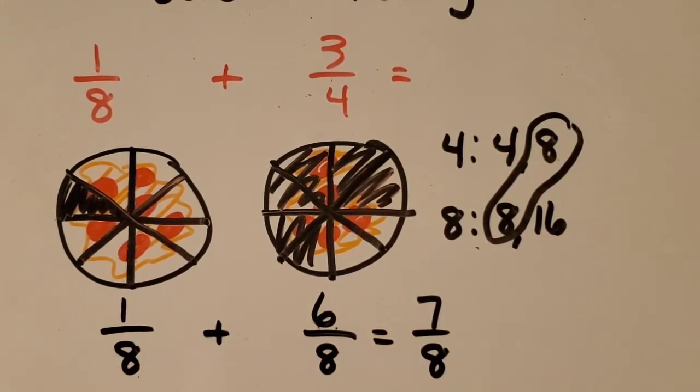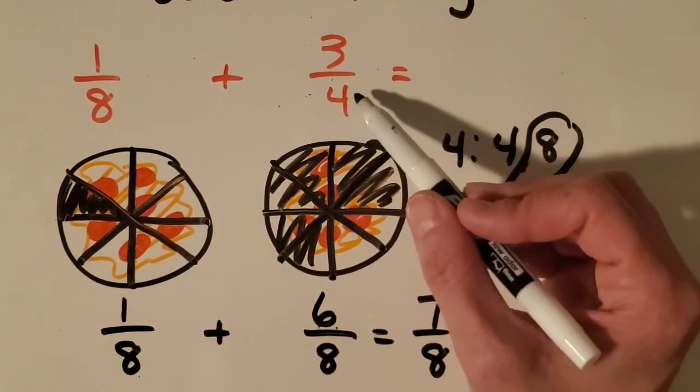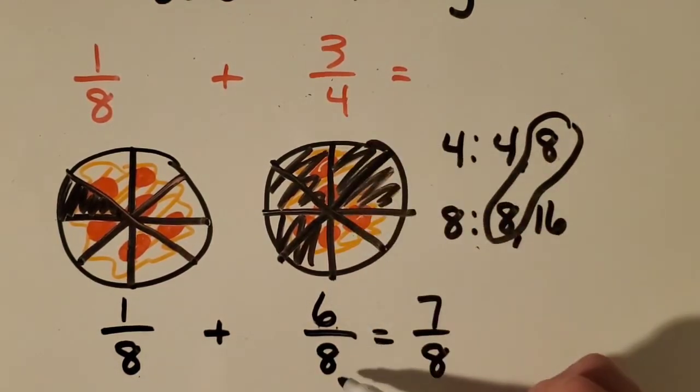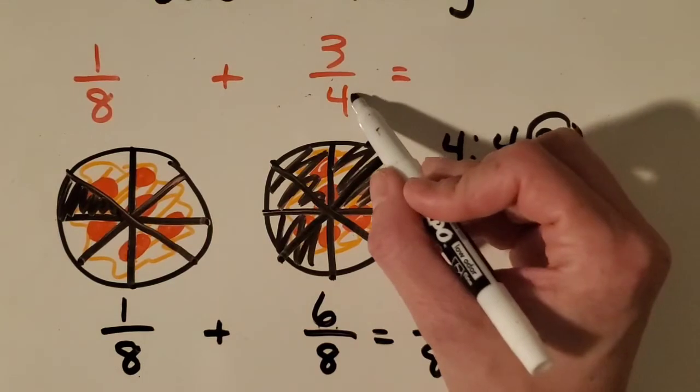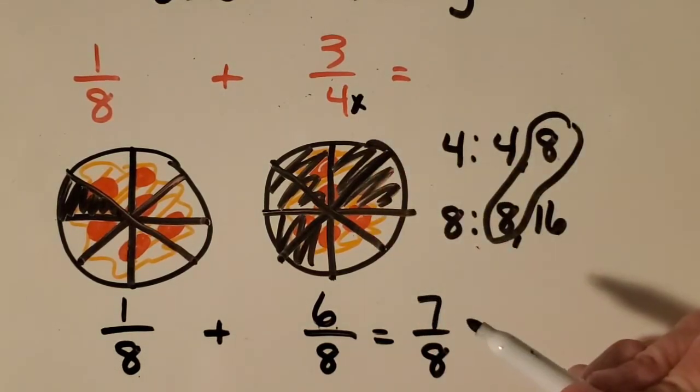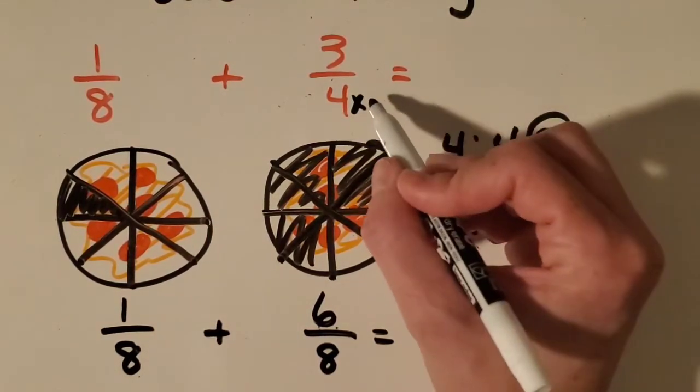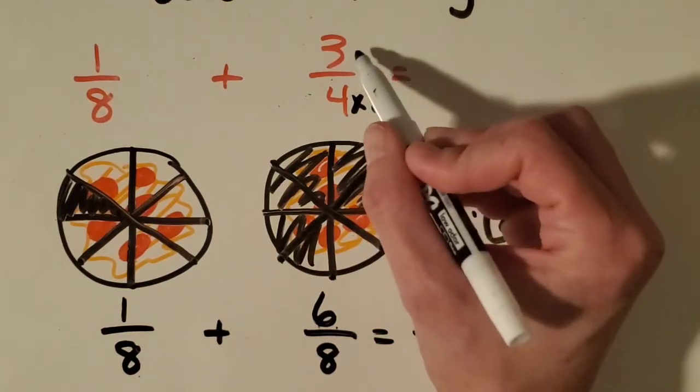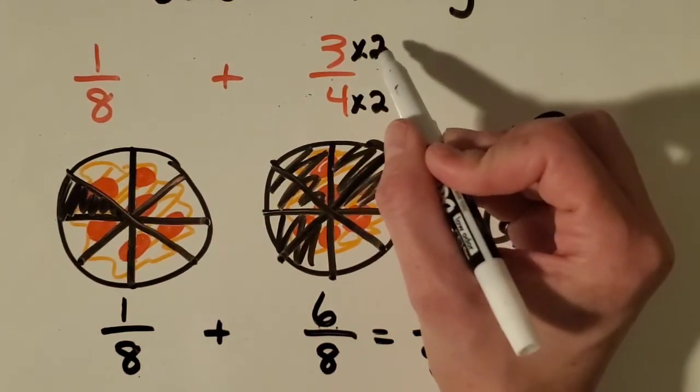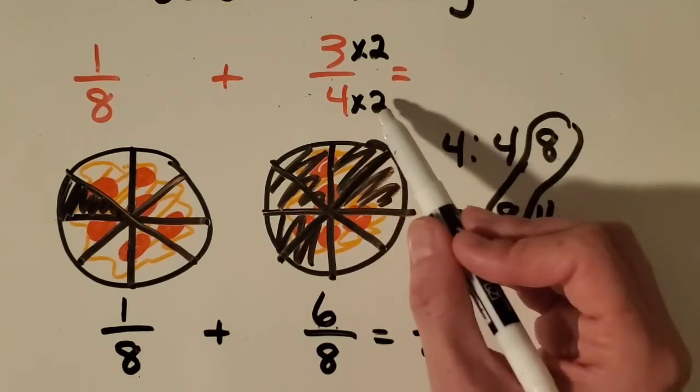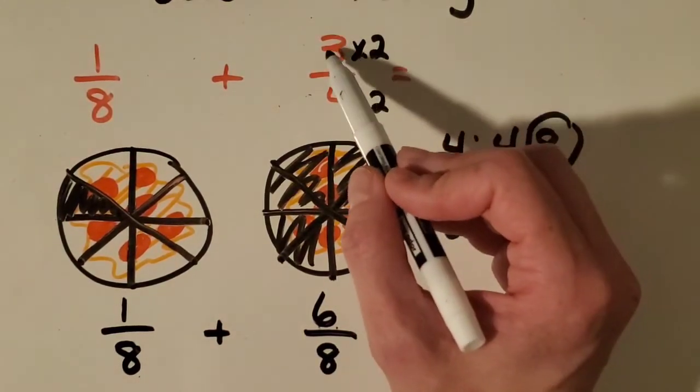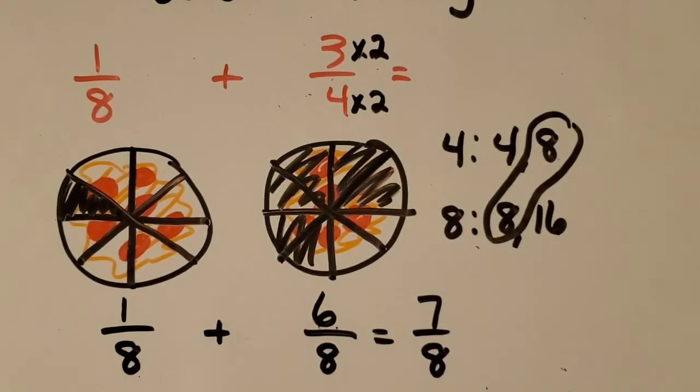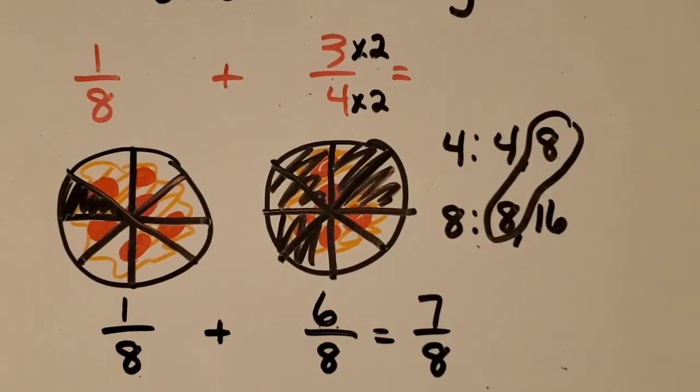Let's double-check just to make sure if that pattern works. So how do I get from four to eight? What can I multiply by? Good job, by two. And so let's do that to the top number, the numerator, times two. Four times two is eight. Three times two is six. Great job.